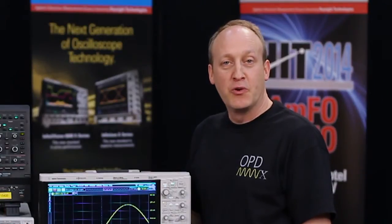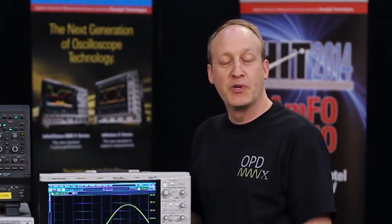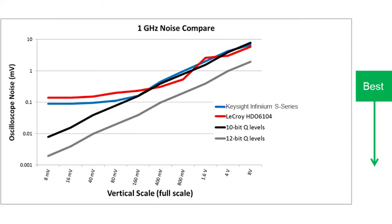What I'd like to do is show you some differences between the two in terms of measurements. The enemy of resolution is noise. If the noise floor isn't sufficiently low, the additional bits of resolution are really used just for digitizing noise. Let's look at both scopes at 1 gigahertz bandwidth. The noise floors on both scopes are almost identical at all vertical settings, enabling the 10 bits to have the same value as 12 bits.